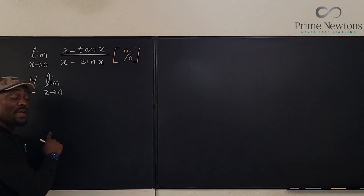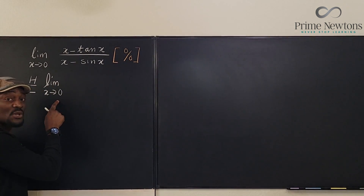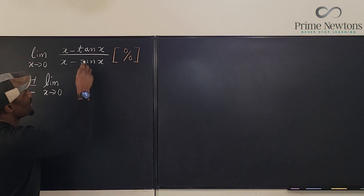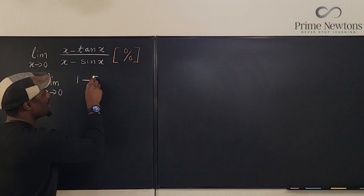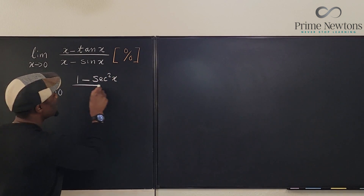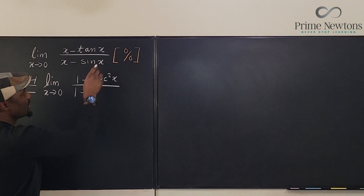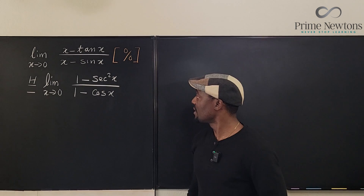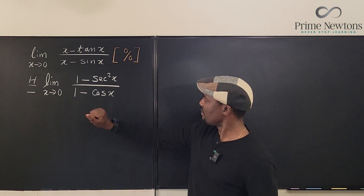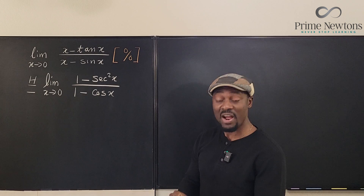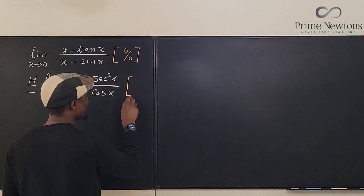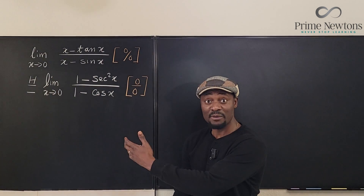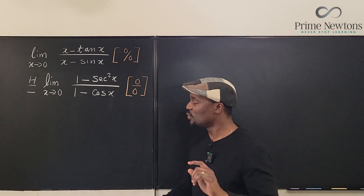We apply L'Hôpital's rule: we take the limit as x goes to zero of the derivative of the top divided by the derivative of the bottom. The derivative of the top gives us 1 minus sec²(x), and the derivative of the bottom gives us cos(x). So we've applied L'Hôpital's rule — and we observe we still have zero over zero. That's the indeterminate form we have, but this does not help us.